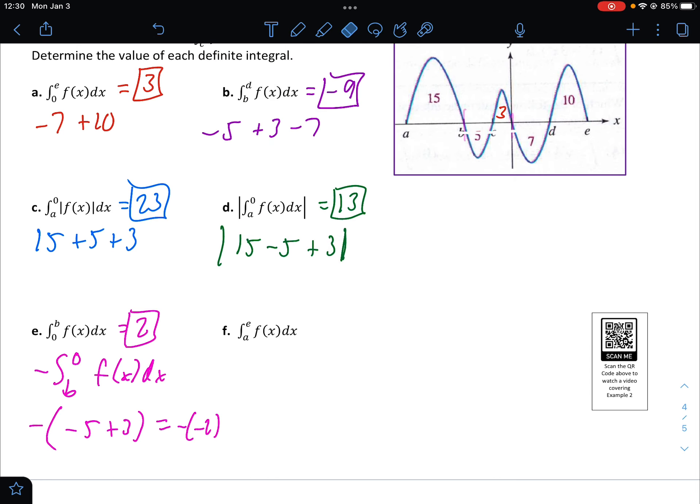And then finally, the integral from a to e, so starting to ending here, that's going to be 15 minus 5 plus 3 minus 7 plus 10. That would be 28 minus 12, or 16.